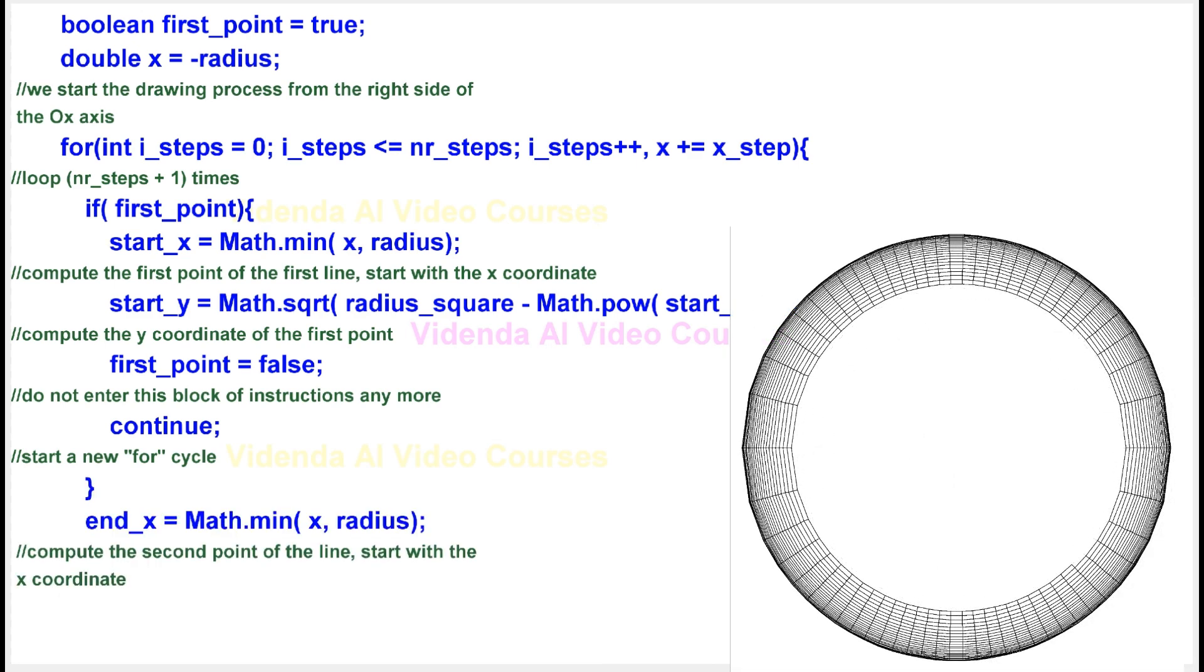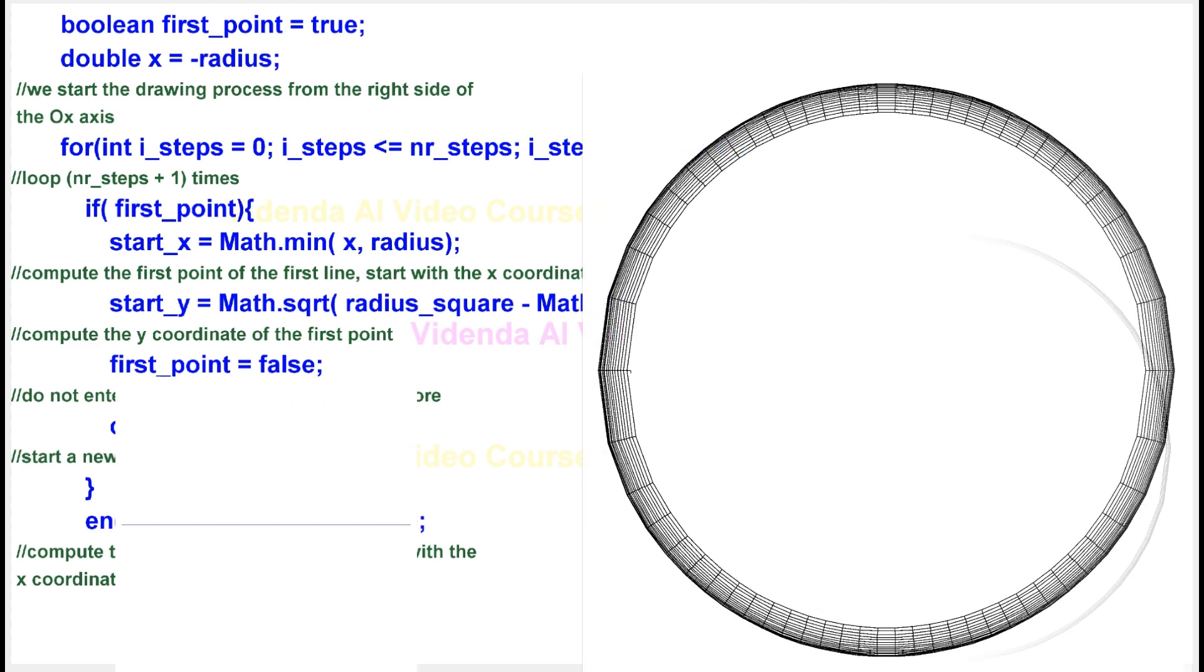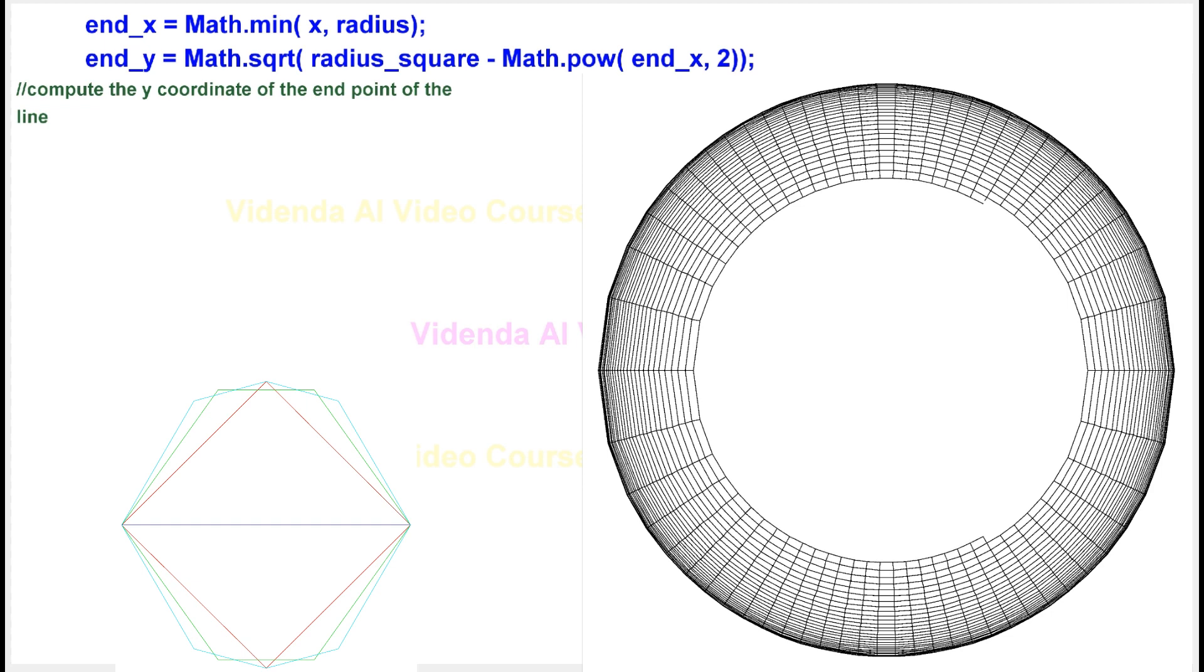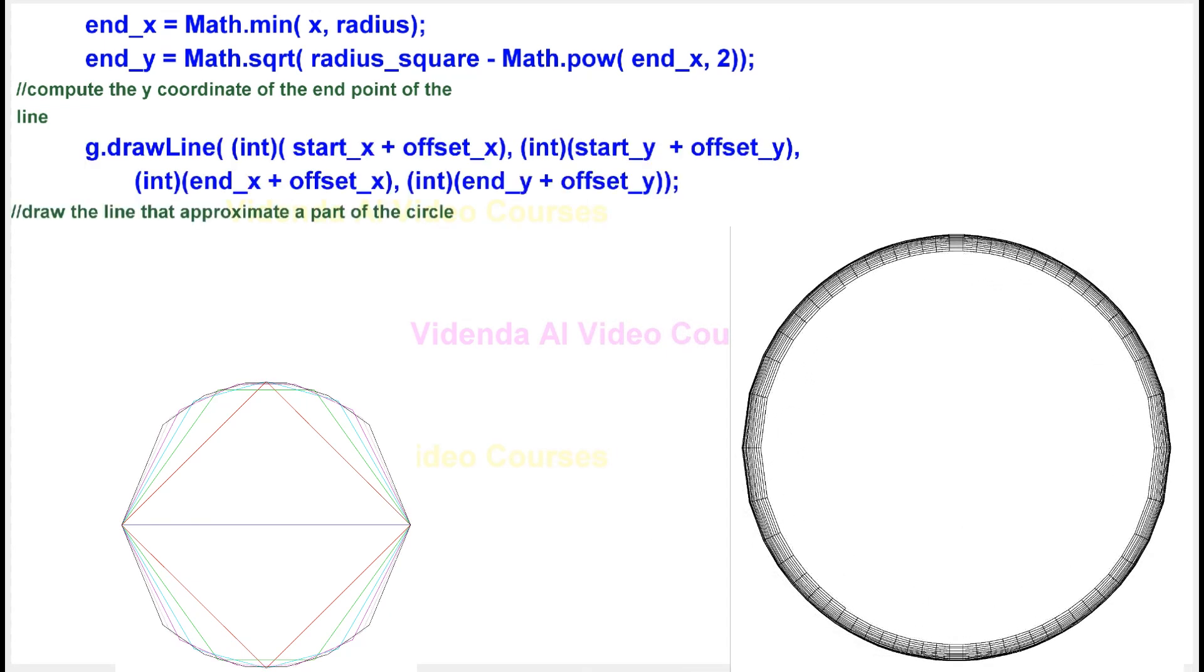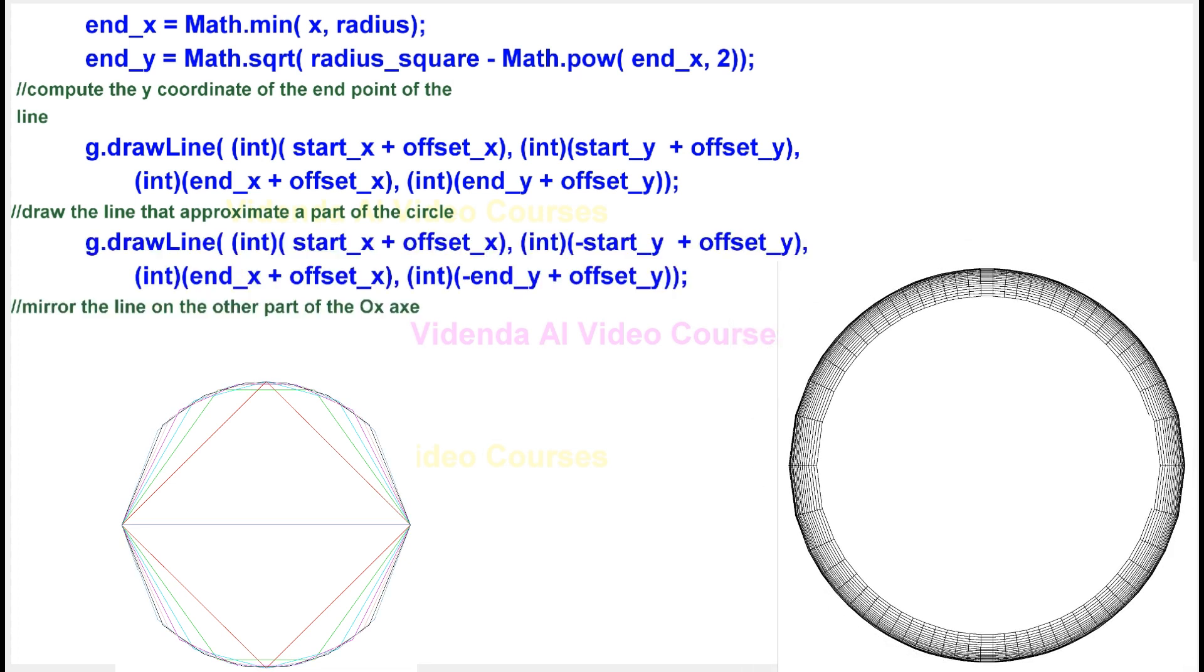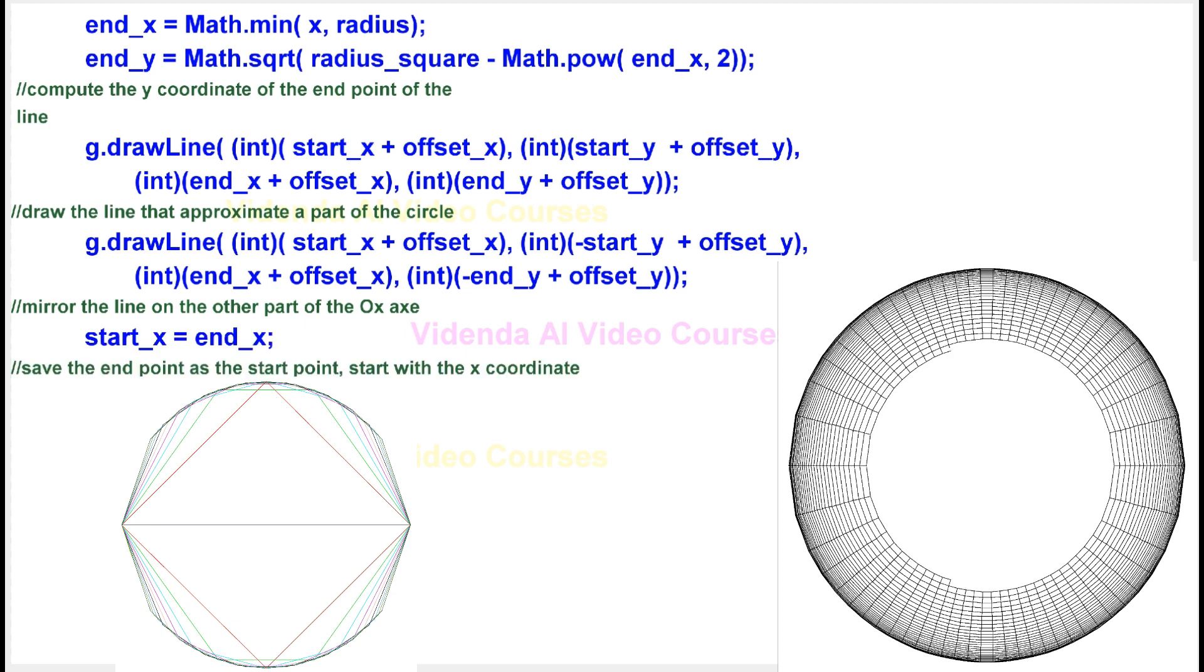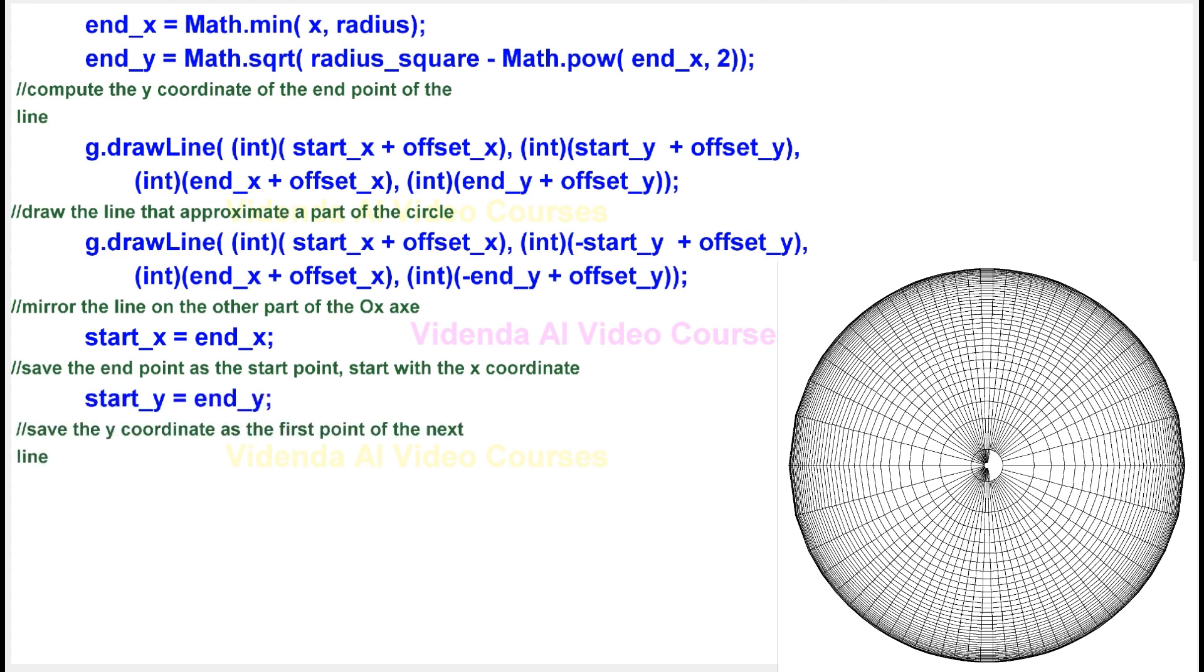Compute the second point of the line, start with the x-coordinate. Compute the y-coordinate of the end point of the line. Draw the line that approximates a part of the circle. Mirror the line on the other part of the aux axis. Save the end point as the start point, start with the x-coordinate. Save the y-coordinate as the first point of the next line.